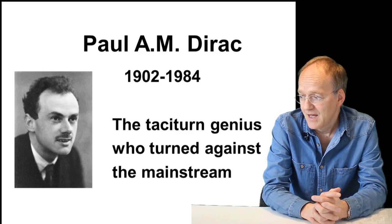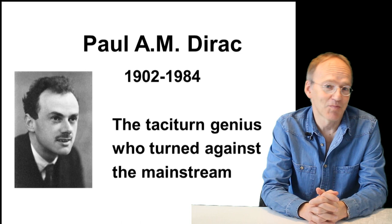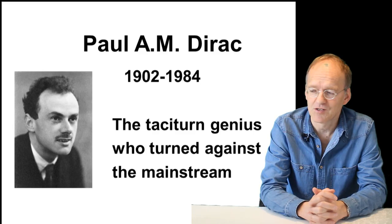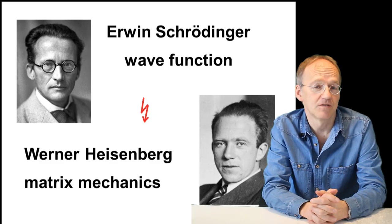I called him the taciturn genius who turned against the mainstream. Dirac didn't like to talk. People were saying that the only expressions he used were yes, no, and I don't know. There would be a lot to tell about his infancy and his father who forced him to talk in French, but we have to focus on his scientific achievements. One of the most important things happened when he was a young student aged 23.